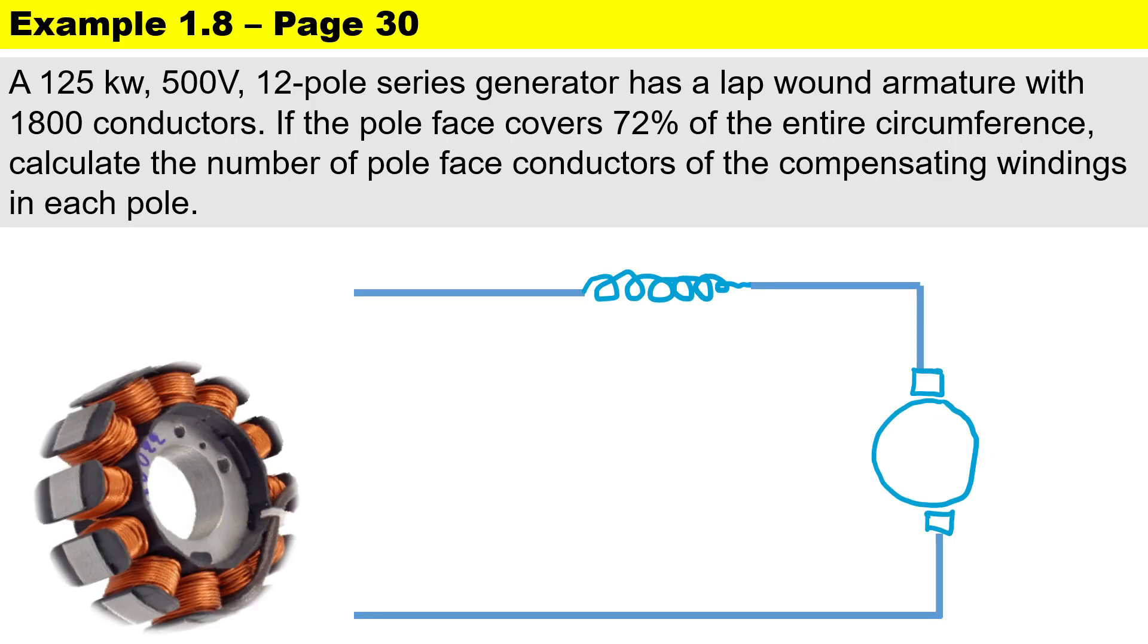In Example 1.8 on page 30: A 125 kW, 500V, 12-pole series generator has a lap wound armature with 1800 conductors. If the pole face covers 72% of the entire circumference, calculate the number of pole face conductors of the compensating winding in each pole.